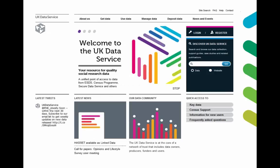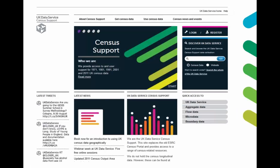Talking about the website, here's the screenshot from there. You can see there's lots of information on it, but to access specifically the census support part of the site, you can click a link on the right-hand side and that'll take you to the mini census support website. On that, we have the obvious things like 'get census data' at the top, and 'use census data', which has links to the question forms and the definitions, for example.